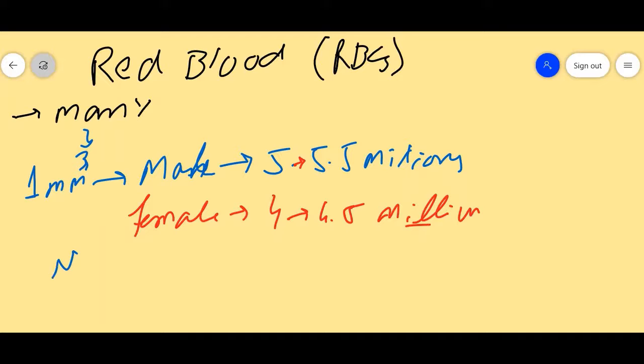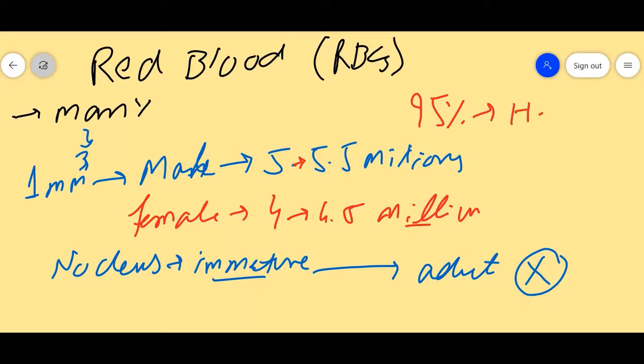Now we can see the properties. When red blood cells are immature, the nucleus is present. When they mature, the nucleus will be degraded. Also, if we are talking about volume composition, 95% is hemoglobin. Hemoglobin is a protein which transfers oxygen and CO2. This is the main function. The remaining 5% consists of salts and enzymes.